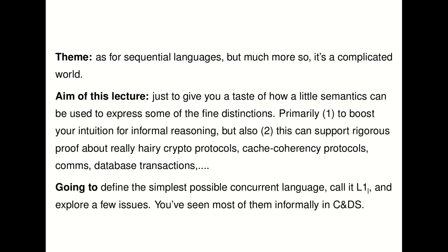It's a complicated world, and the way we make progress in a complicated world is by turning to mathematics. As mathematician John von Neumann said, anyone who thinks mathematics is complicated has not looked at the real world, because mathematics is a tremendous simplification. What we're going to see in this lecture is how using just a little bit of semantics can express many fine distinctions. Once you have a formal semantics for concurrency, it boosts your intuition for informal reasoning. As a professor of mine used to say, the difference between a Turing machine and a finite state automaton is that the Turing machine has a piece of paper and a pencil — being able to write things down is a tremendous benefit in and of itself.